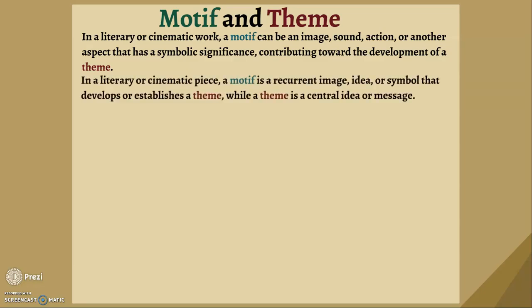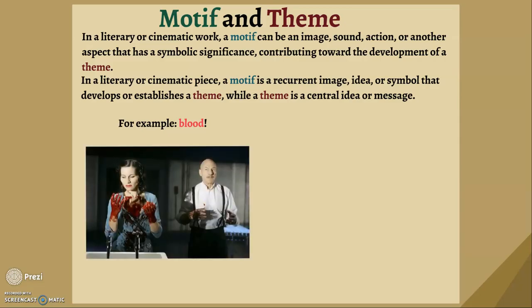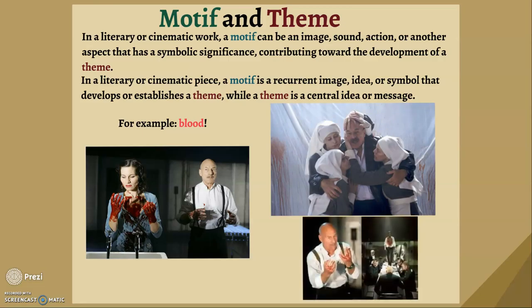For example, I heard 'gore' mentioned — again, that's tone and image. In a literary or cinematic piece, a motif is a recurring image, idea, or symbol that develops or establishes a theme, while a theme is a central idea or message. So let's look at Macbeth: blood — yes, gore is a motif, it's a tone. Blood is a specific image, but it's not a theme because blood is not a concept, it's just an object. Can it create a theme? Yes, because it could symbolize something. Once you say blood symbolizes guilt, now you're starting to talk about theme. Look at all the ways blood reoccurs as a motif.